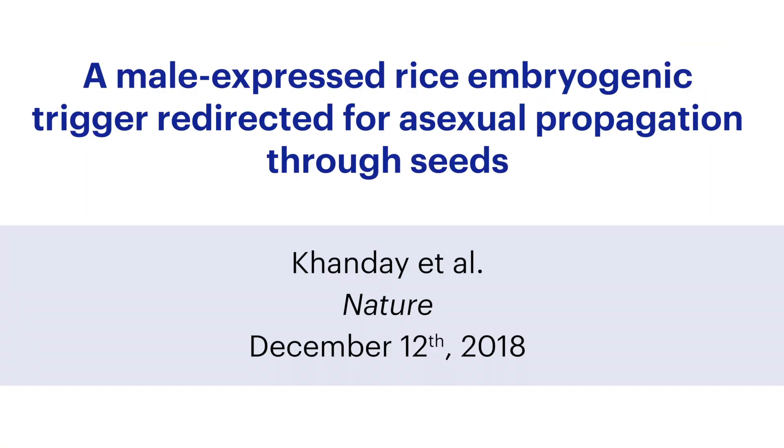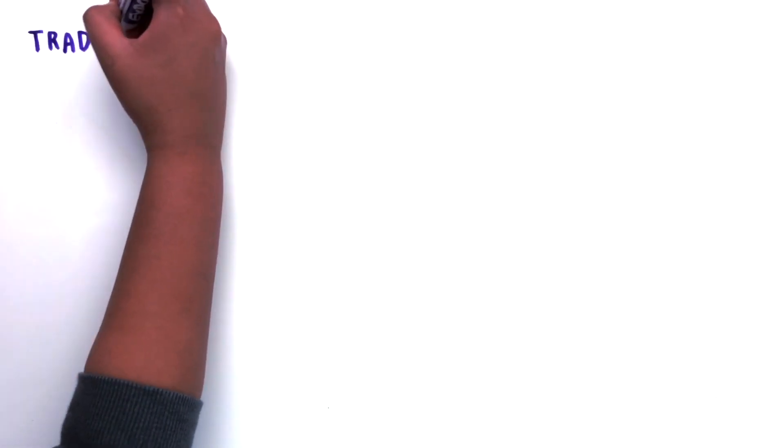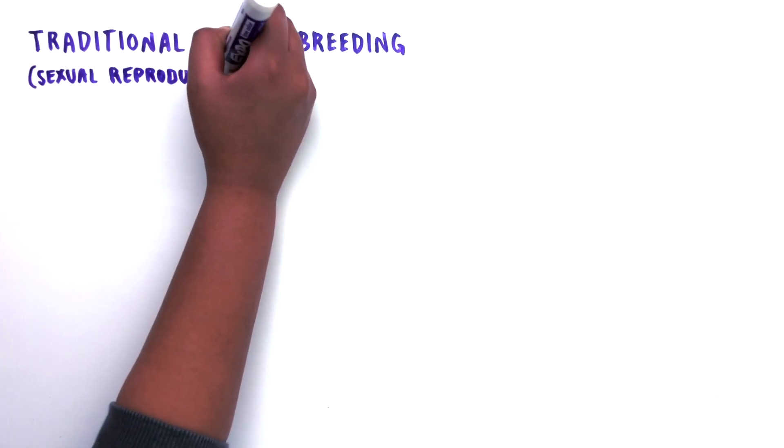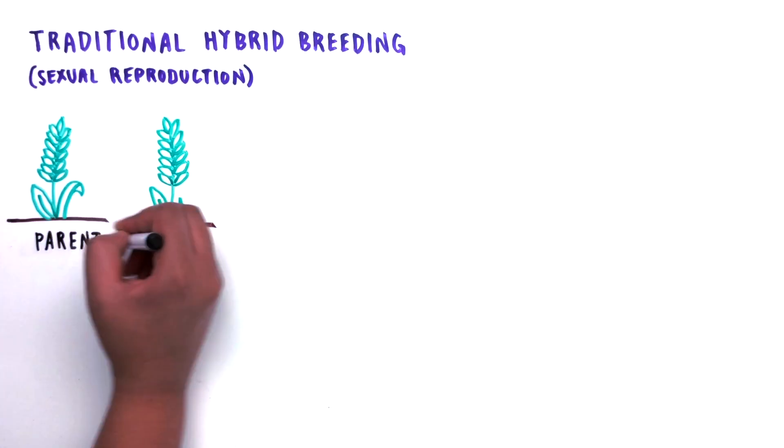A male-expressed rice embryogenic trigger redirected for asexual propagation through seeds. Traditional hybrid breeding is a process that generates crops with high yield and other desirable characteristics. By breeding two different high-performing plants together,